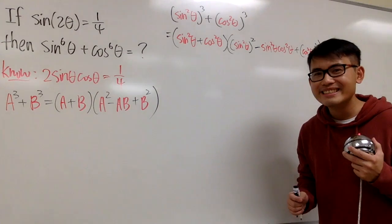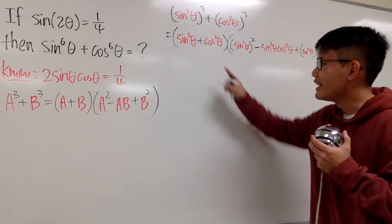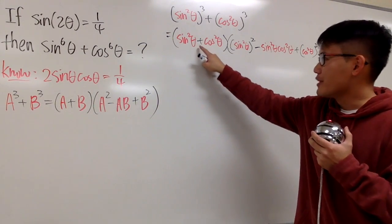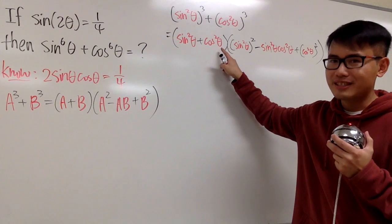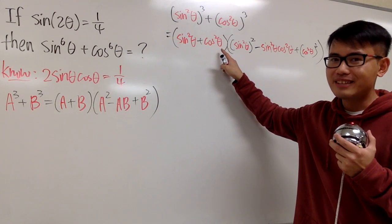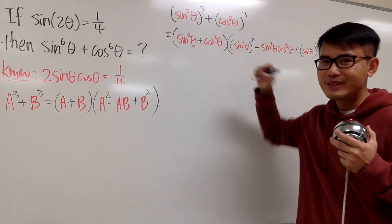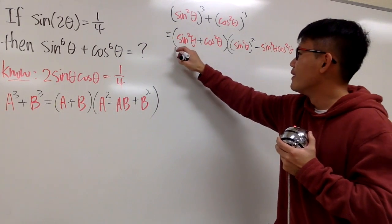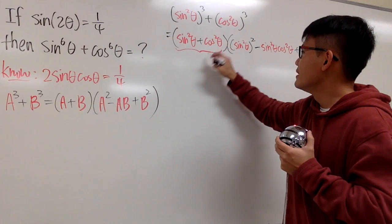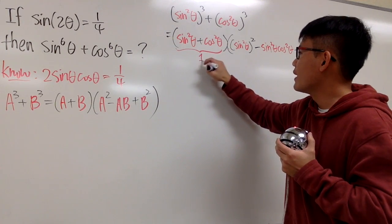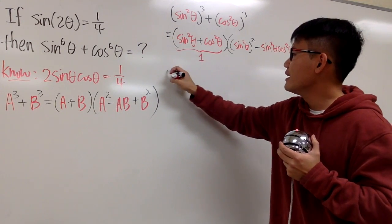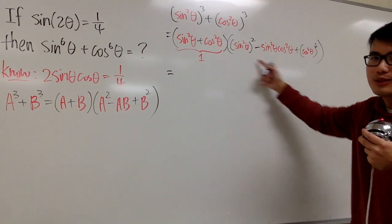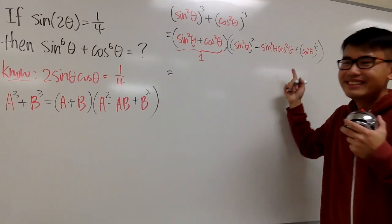How cool is this? You see it already — sin²θ + cos²θ is nothing but 1. So the first factor is just 1, and 1 times the second factor means we just have the second factor to work with.